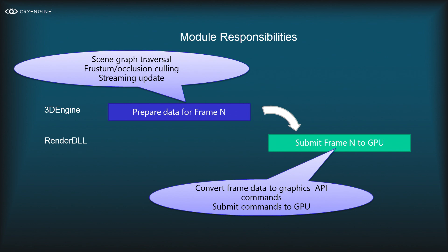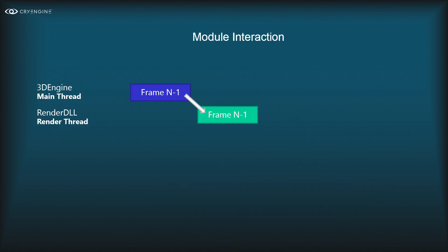On the renderer side, we convert the data received from the 3D engine into actual graphics API commands — for example, uploading new MIPs to a texture or issuing draw calls. In order to be performant, we do the work of these two modules in a pipeline fashion, meaning while the 3D engine is preparing the current frame, the render thread is rendering the previous frame.